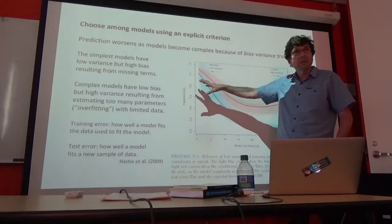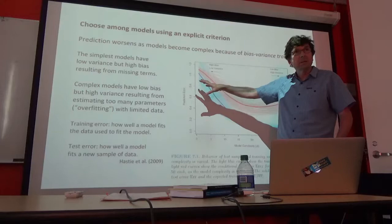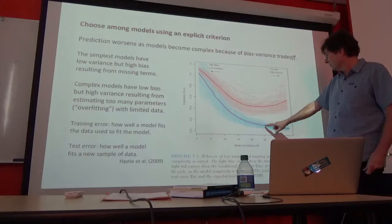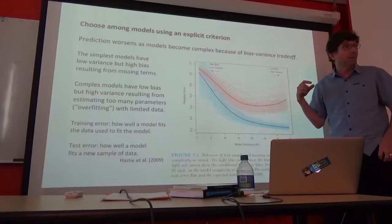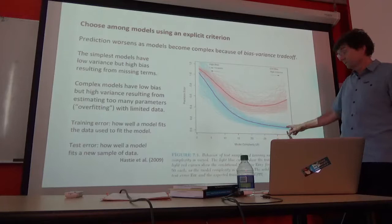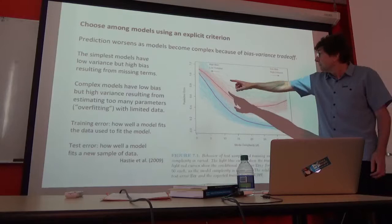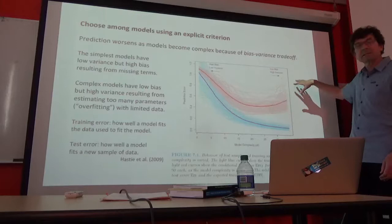As I showed with the polynomial regression, the more terms you include, the better you do when predicting the very same data you're training on. Predicting the data itself is easy — the most complicated model always fits the data best, in my case the 13th-degree polynomial. But prediction on a test sample falls off. Prediction improves for a while, but then worsens again as models become more complex. Why does this happen?